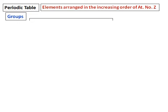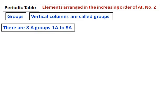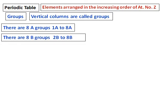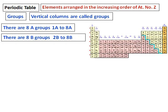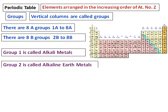Let's learn first about the groups. Vertical columns in a periodic table are called groups. There are 8 A groups that are named from 1A to 8A, and there are 8 B groups named from 2B to 8B. For your reference, a periodic table is given on the side. You can identify the groups which I have just mentioned.